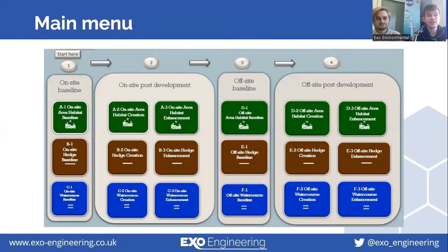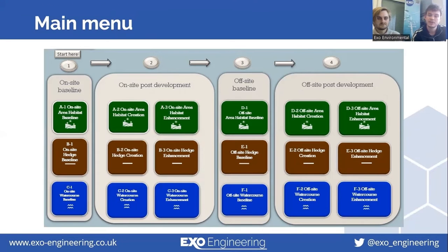This is the main menu interface of Metric 4. As you can see, hedgerows and watercourse biodiversity values are determined separately to that of area. In order for this talk not to be too long, I'll just be focusing on area habitat creation and enhancement. Hedgerow and watercourse data can be input similarly to area, but relies on linear units rather than area data.